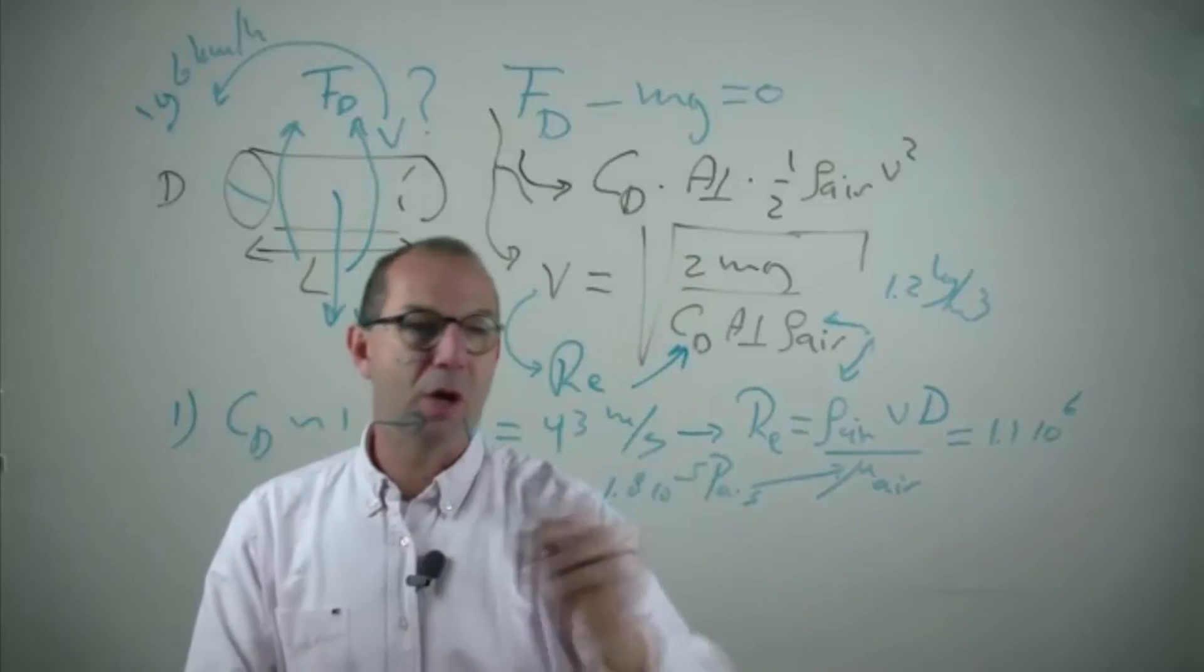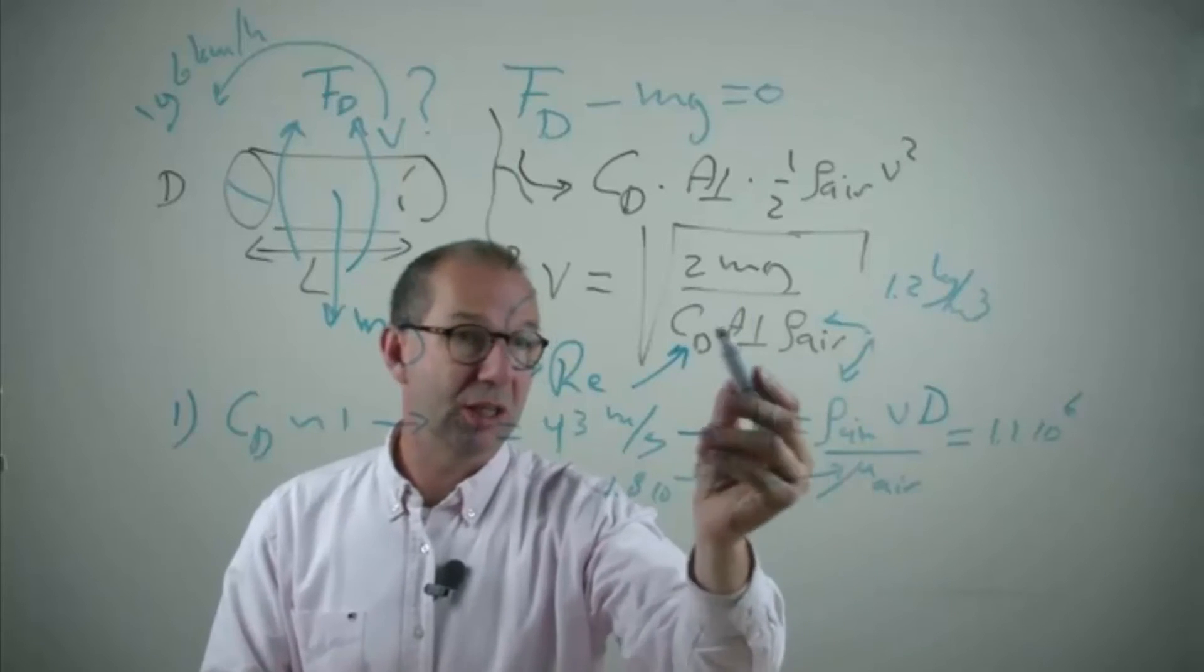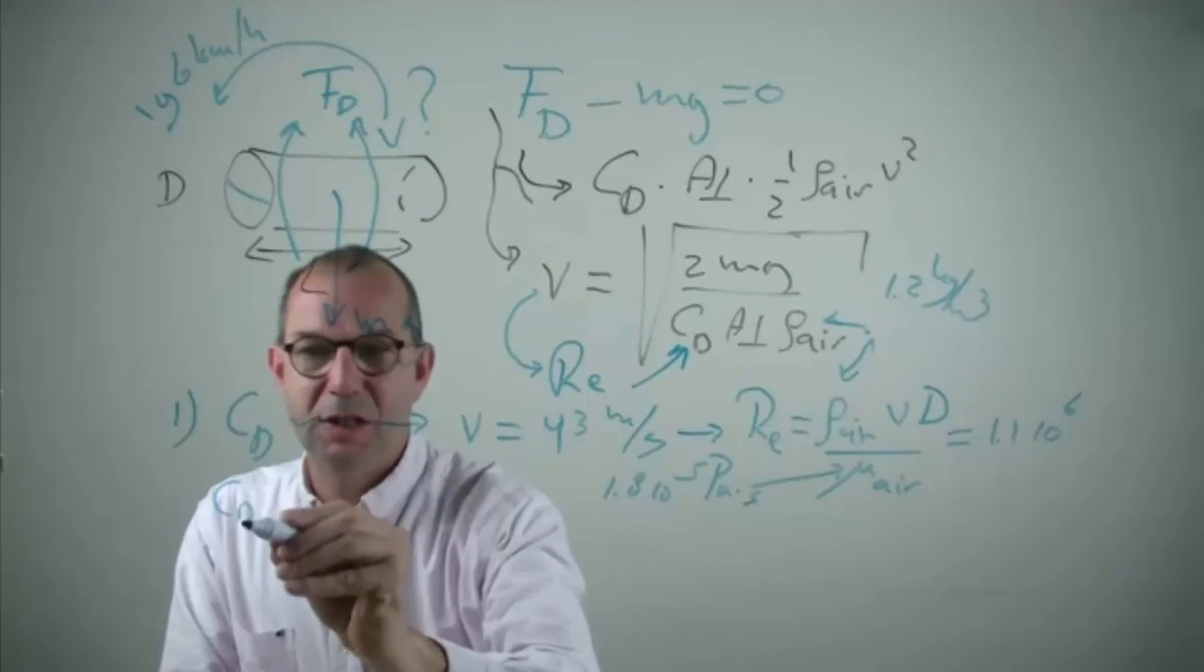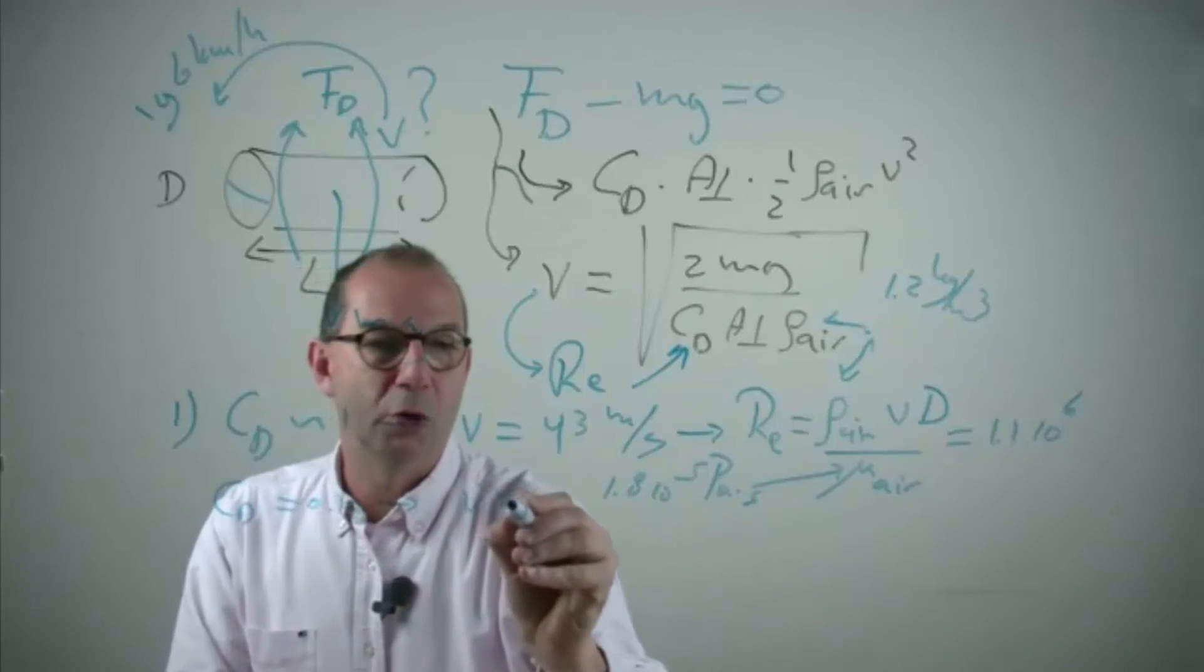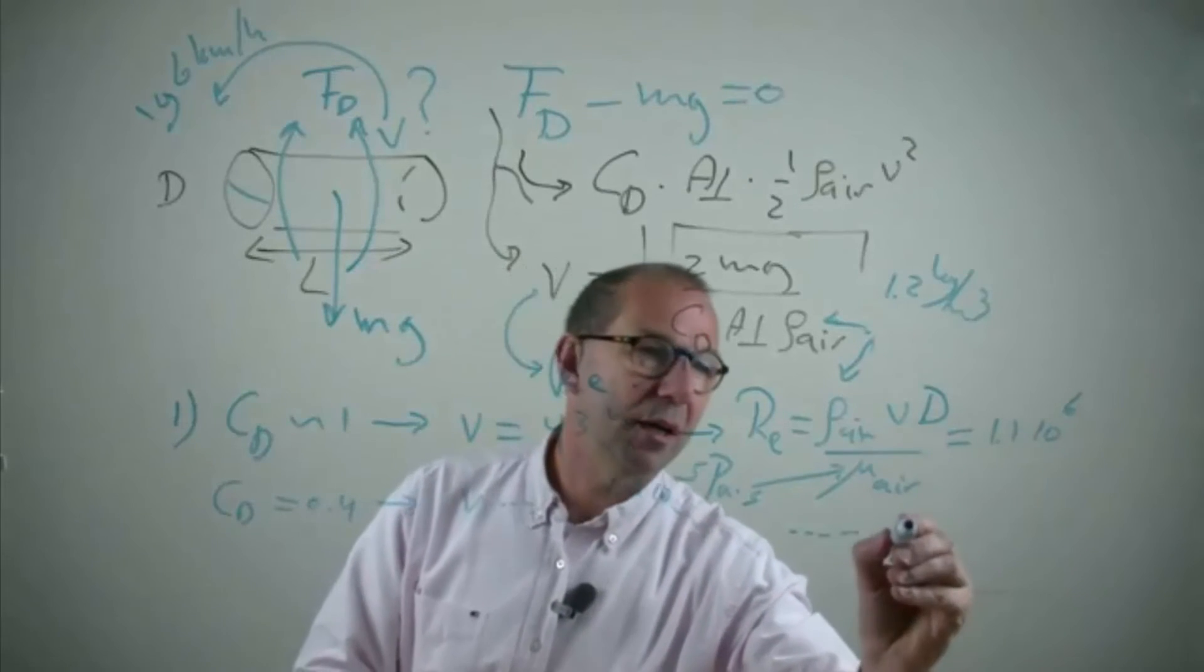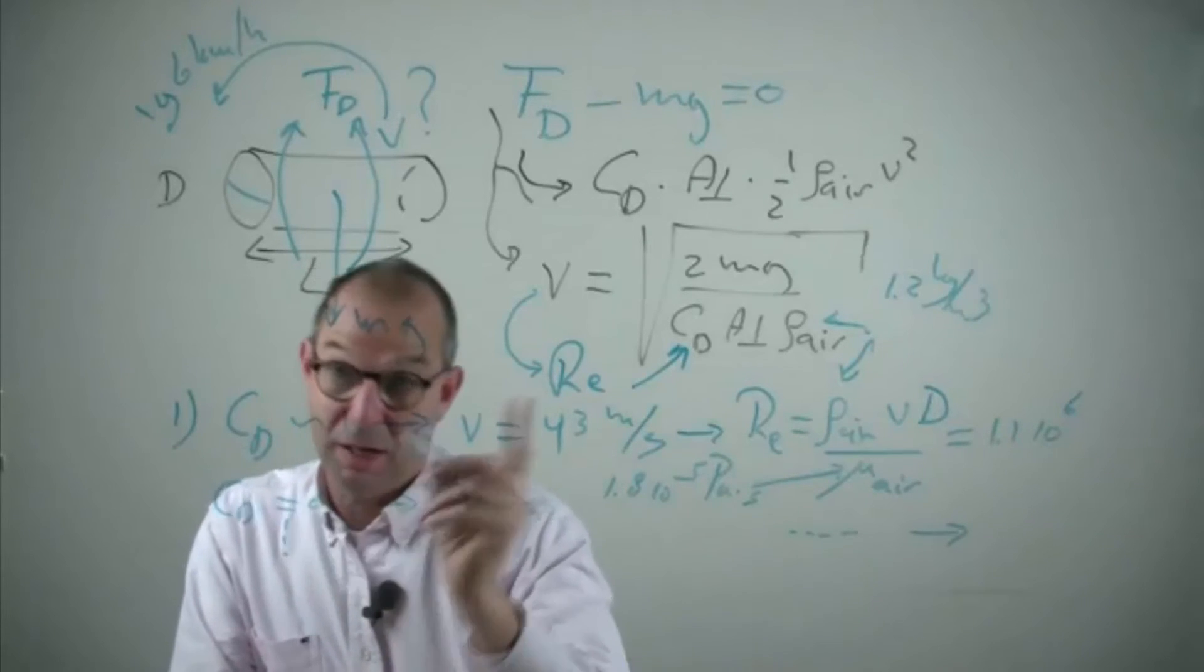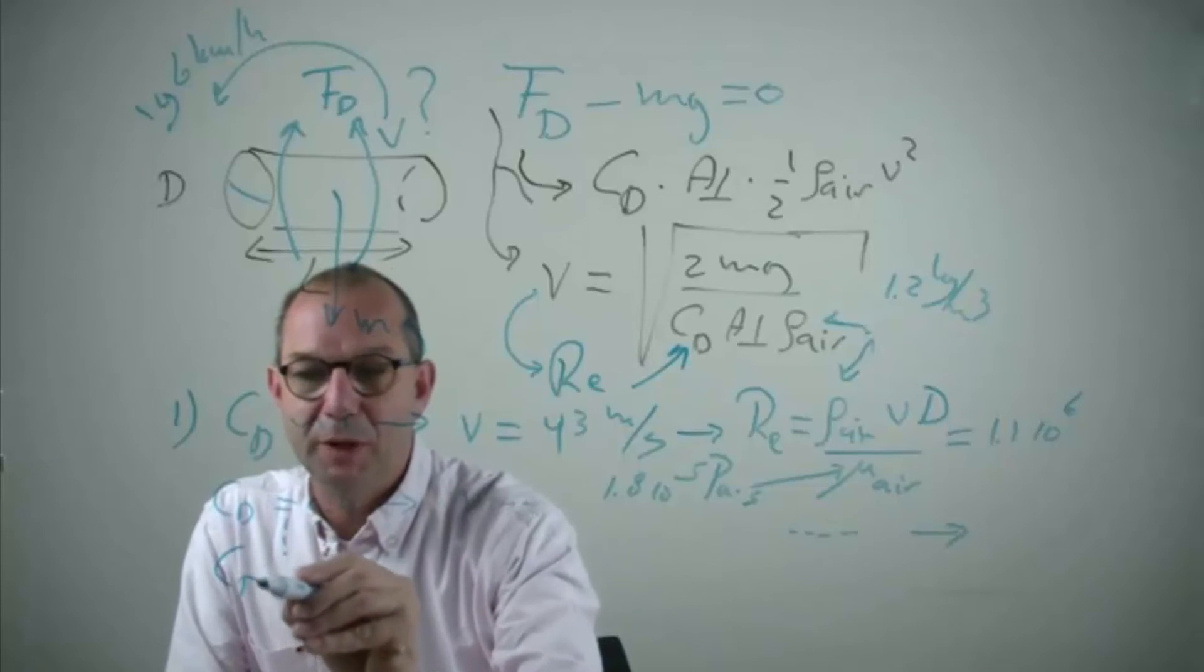Then I can look up for a cylinder what the CD is for this Reynolds number and I find that CD is 0.4. I can recompute the velocity, I can recompute the Reynolds number and I can find a new CD. And if you keep on doing this, eventually, and in practice rather quickly, you will arrive at the steady point.